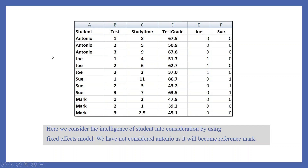Let's extend this example further. Now we want to introduce the intelligence of the student in our model. We will have to create dummies. There are 4 students, so the number of dummies will be 1 less — that is, 3. Wherever Joe is present, it will be indicated by 1, and the absence of Joe will be indicated by 0.